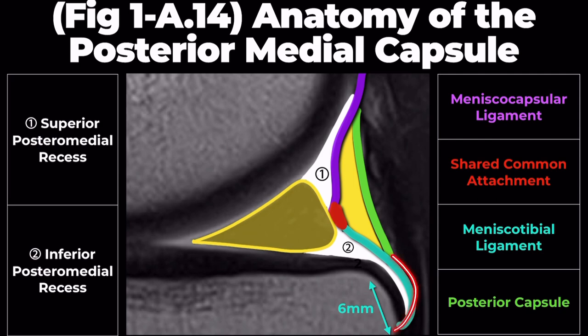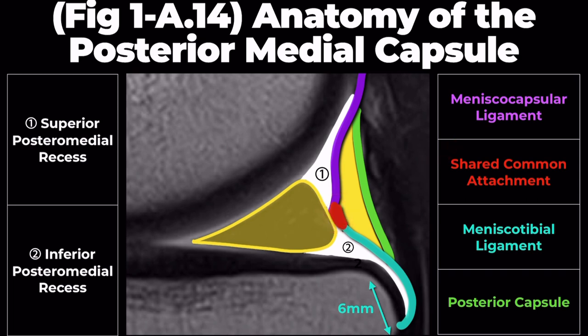And the meniscotibial ligament, indicated in aqua, attaches inferiorly to the tibia. These ligament attachments may converge at a common point, highlighted in red as the shared common attachment. The posterior medial capsule connects inferiorly to the top margin of the posterior medial meniscus at an average depth of 36.4% of the meniscus's total posterior height.